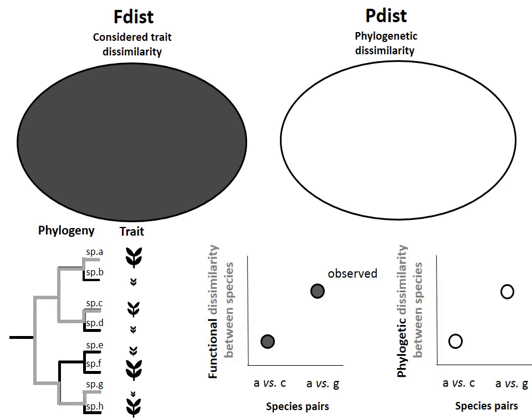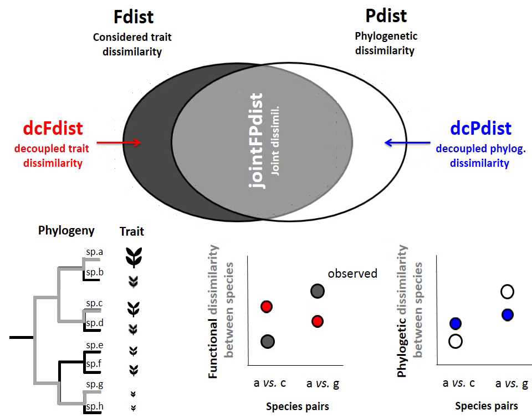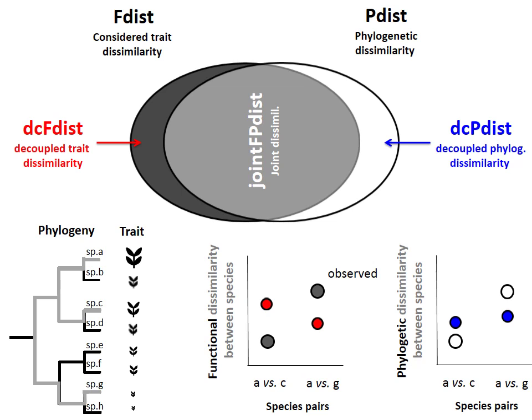Let us imagine that we have a pair of species which is functionally and phylogenetically similar — for example, pair A and C in the figure — and one pair which is very different, pair A and G. What the decoupling will do, in the case of high phylogenetic signal, is zoom in on species that are more phylogenetically close, thus magnifying the dissimilarity between them. For example, it will increase the differences between species A and C, while decreasing the prevailing effect of species that are already phylogenetically far from each other, such as species A and G. Note that this is a sort of phylogenetic correction to account for phylogeny when assessing trait dissimilarity, though we prefer to think of these approaches as allowing focus on different aspects and scales of differentiation between species.